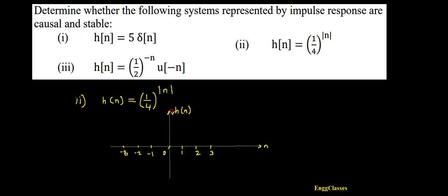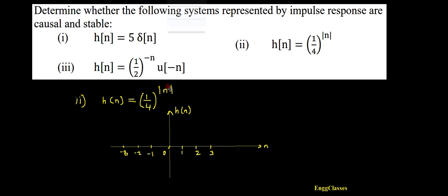Let me put n equal to zero: it is (1/4) to the power zero. Anything to the power zero is always one. Hence, at the zeroth position the amplitude is going to be one. The signal is represented with amplitude one at n equal to zero.